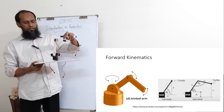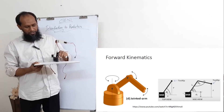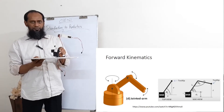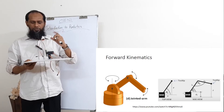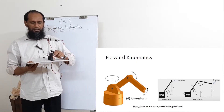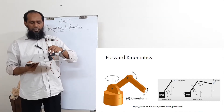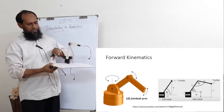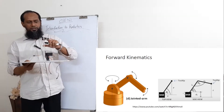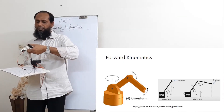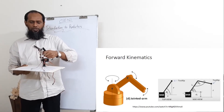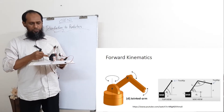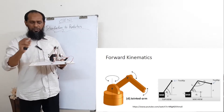There is one degree of freedom at the base — it can rotate the base. This is the first degree of freedom. The second degree of freedom allows movement up and down. The third degree of freedom also goes up and down. So this is a three-degree-of-freedom arm: one, two, and three.